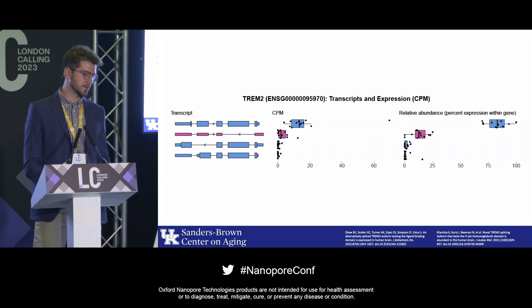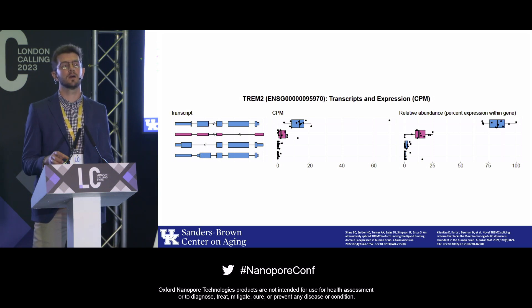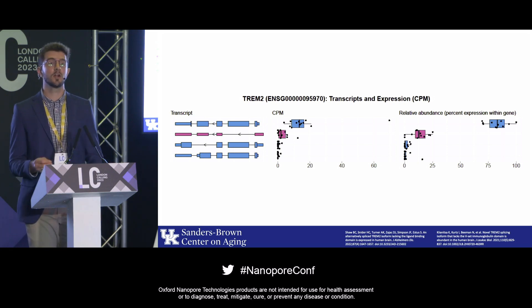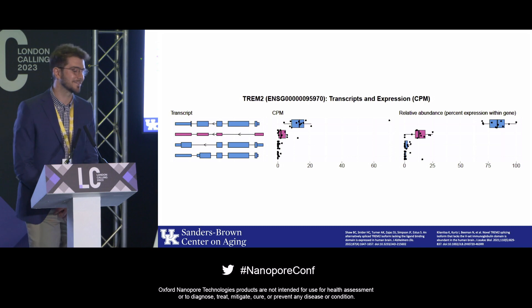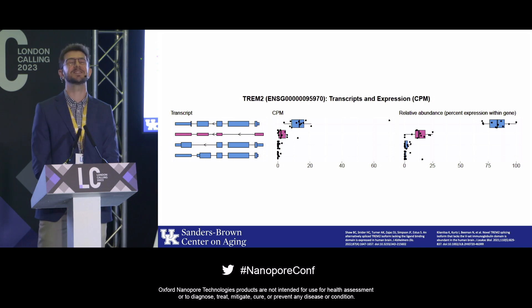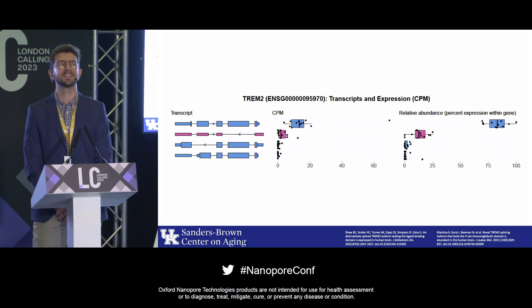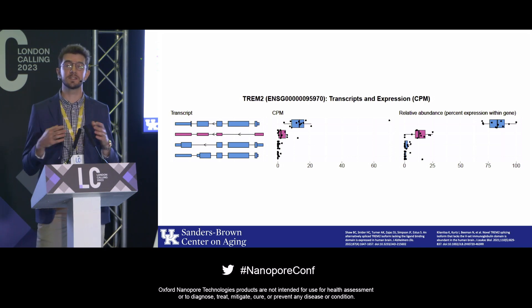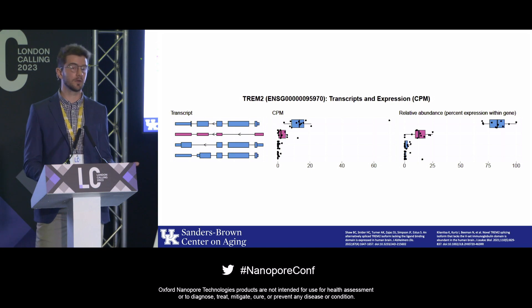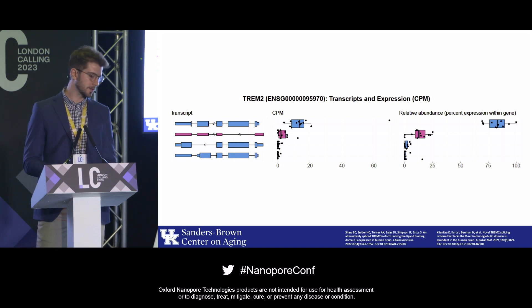In their paper, they found the new TREM2 isoform had 10% relative abundance, and in our analysis we found it to have 16% relative abundance. Our results were really similar, showing that Nanopore can accurately quantify this just as well as qPCR.